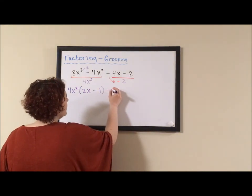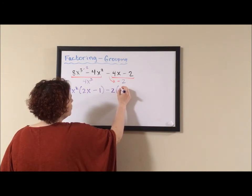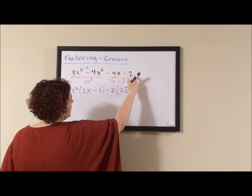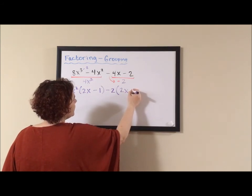We bring down our minus 2, negative 4 divided by negative 2 is 2, so 2x, and negative 2 divided by negative 2, anything divided by itself is 1, plus 1.